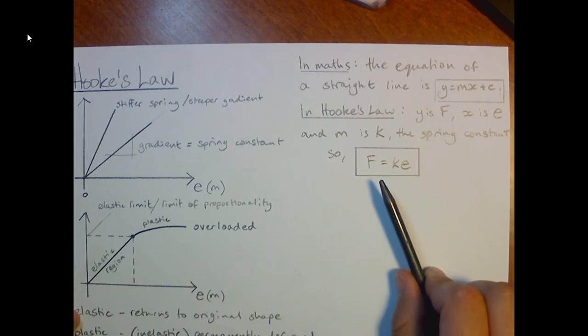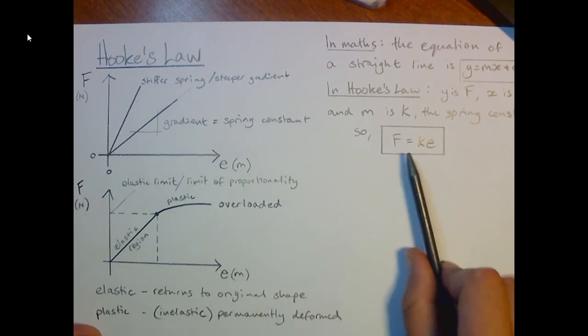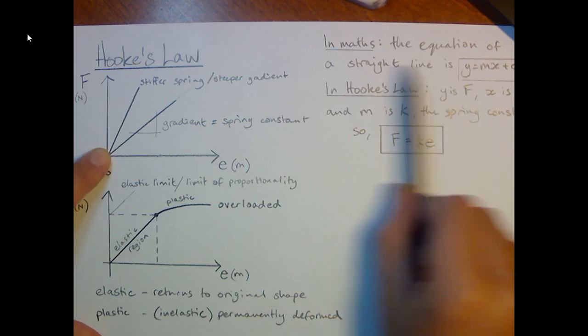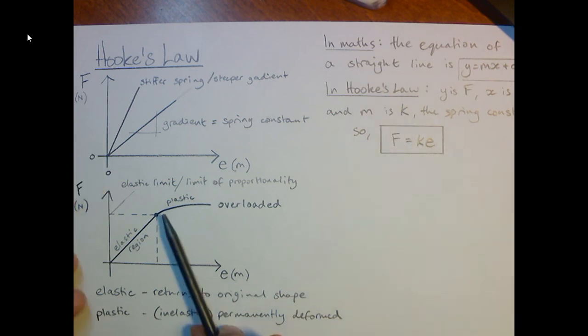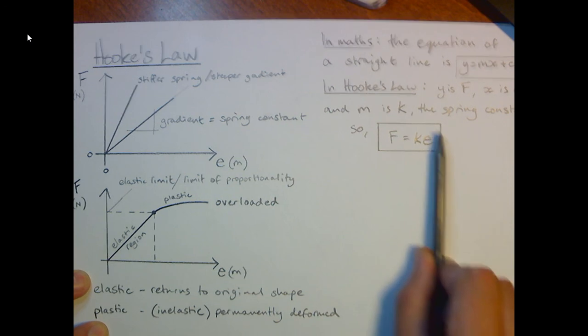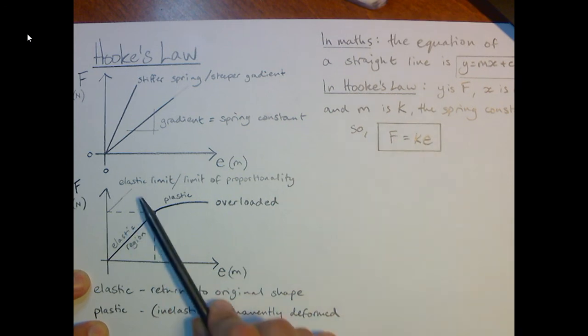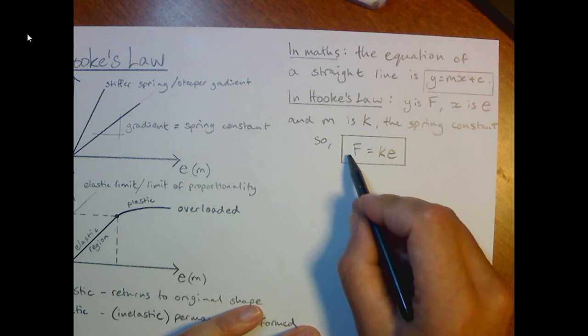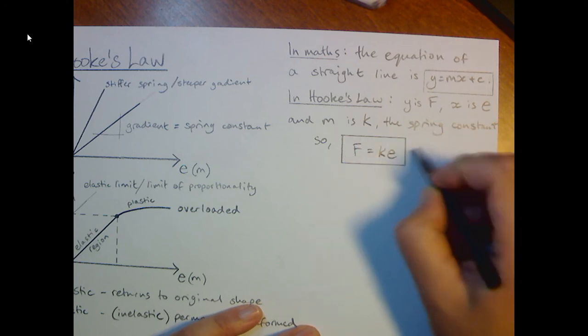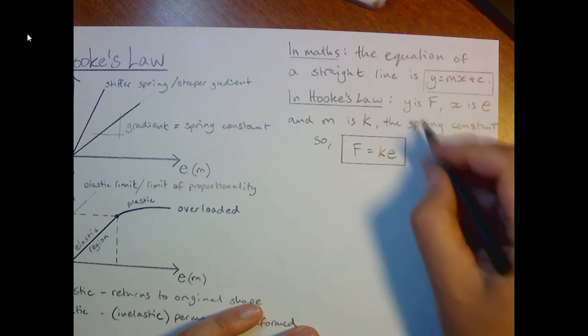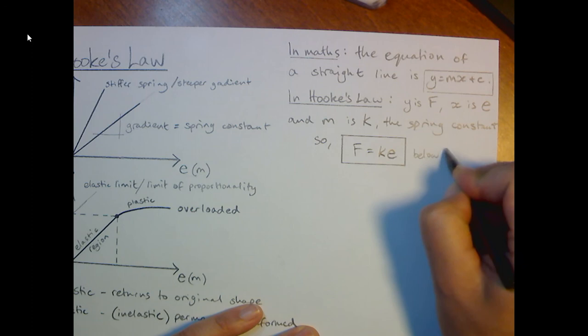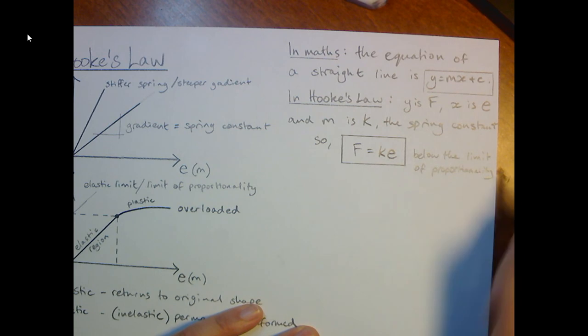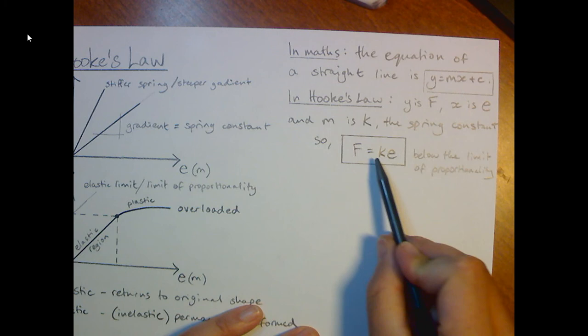One caveat. One thing that we need to understand is that this only works where it is a straight line, because this is the graph of a straight line. This is not the graph of a curved line. And so we can only use Hooke's law in the equation where the spring is below its elastic limit or below the limit of proportionality. So what you might need to do when you learn this equation is have that caveat written next to it.